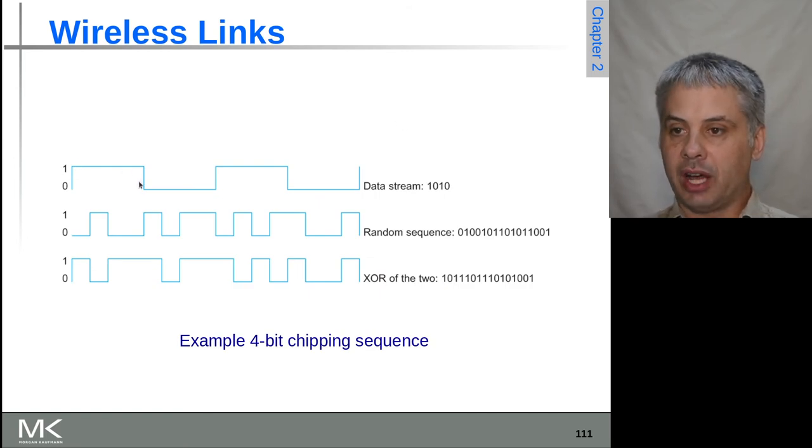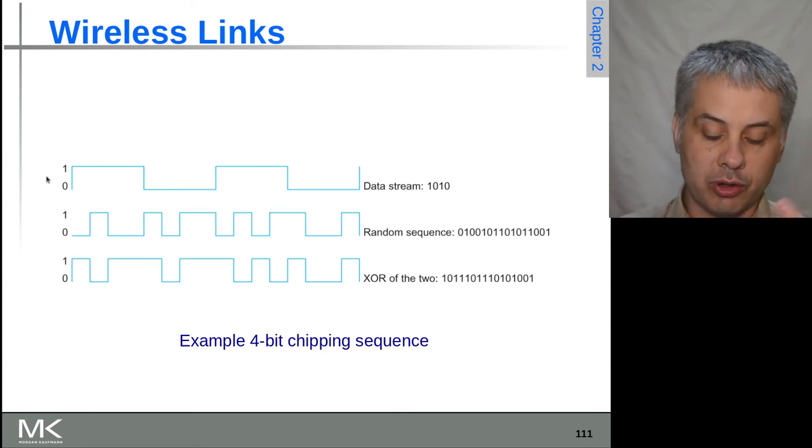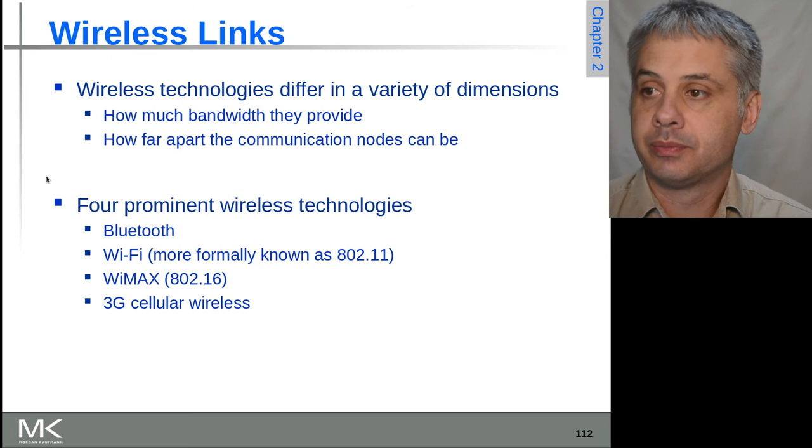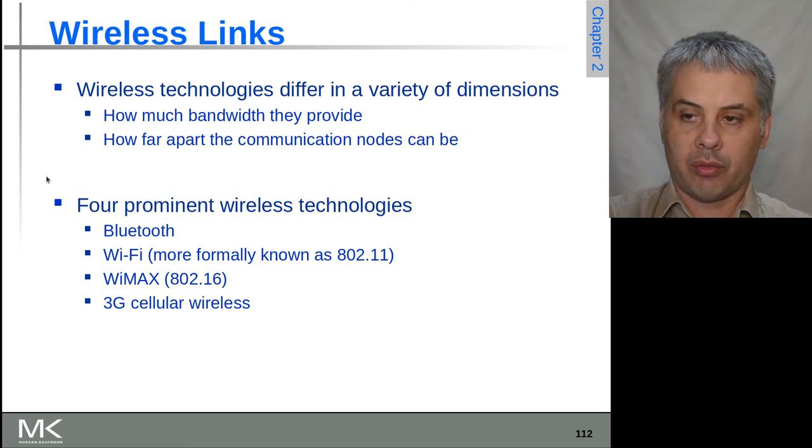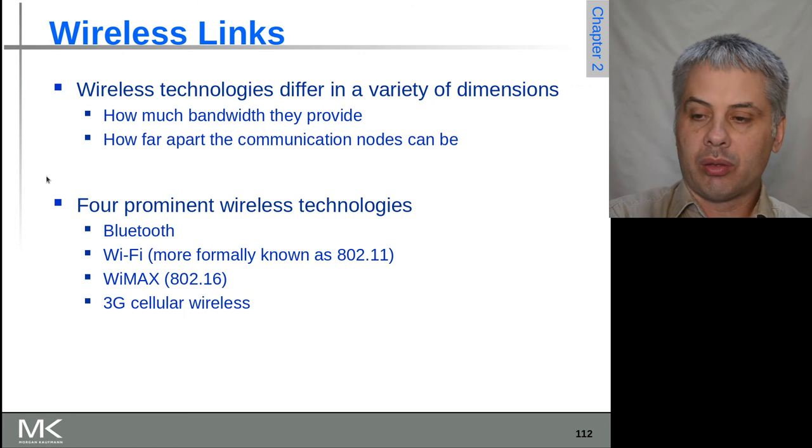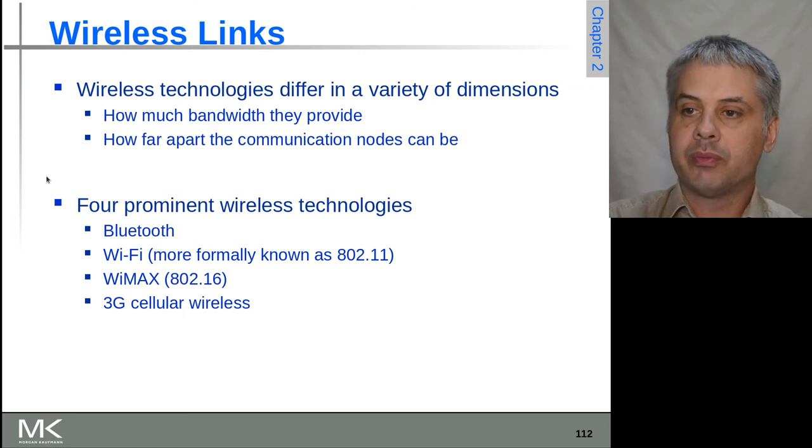For example, if we have our data stream, the bit rate on the data stream is much lower than the random sequence to which it's exclusive ORed. When we send the exclusive OR of the two, there are higher frequency elements because there are narrower pulses than in the original signal, so it's spanning a wider frequency band.